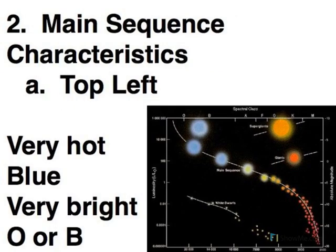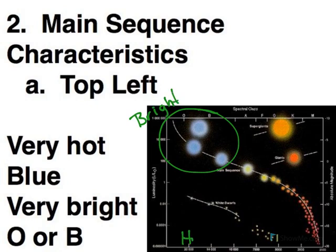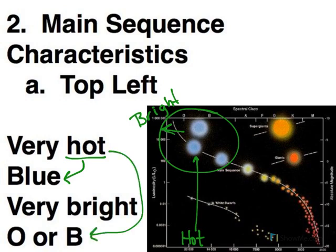So up here in the top left corner, on our scale, vertically we're looking at things that are bright, horizontally we're looking at things that are hot. So up in this corner, we're looking at objects that are hot and bright. If it's hot, then we know that tells us something about the color. So hot stars tend to be blue in color. On our scale, we see that they're very bright, and the temperature is related to the spectral type. So those are also going to be the O and B stars in our spectral classification system.